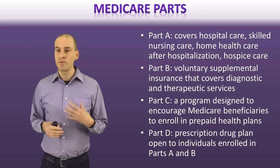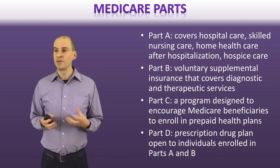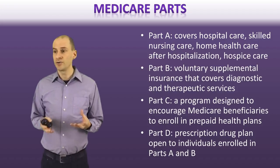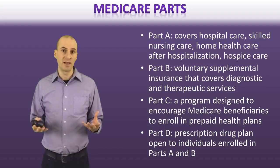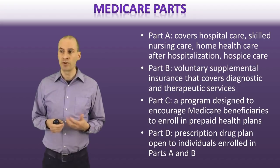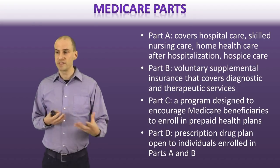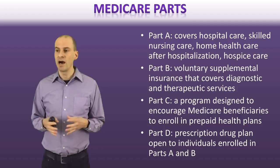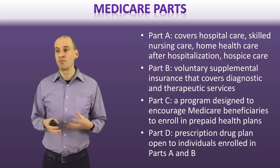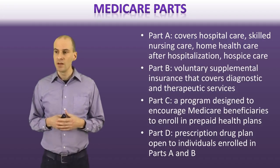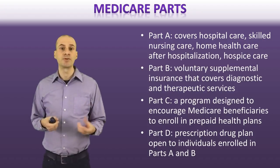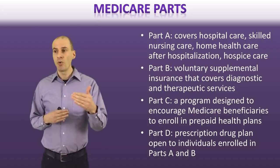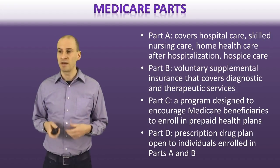Medicare comes in four different parts. Part A really covers hospital care, skilled nursing care, home health, hospitalization, and hospice care. However, it does not cover nursing home care, eyeglasses, or hearing aids — which many elderly folks need. You can pay in more for supplementary insurance, which helps cover other types of services. Part C encourages people to enroll in prepaid health plans. Part D is the most recent addition and essentially helps provide coverage for prescription drug benefits. It's important to know what these different components are because people will be talking about them if you work with people who are on Medicare.